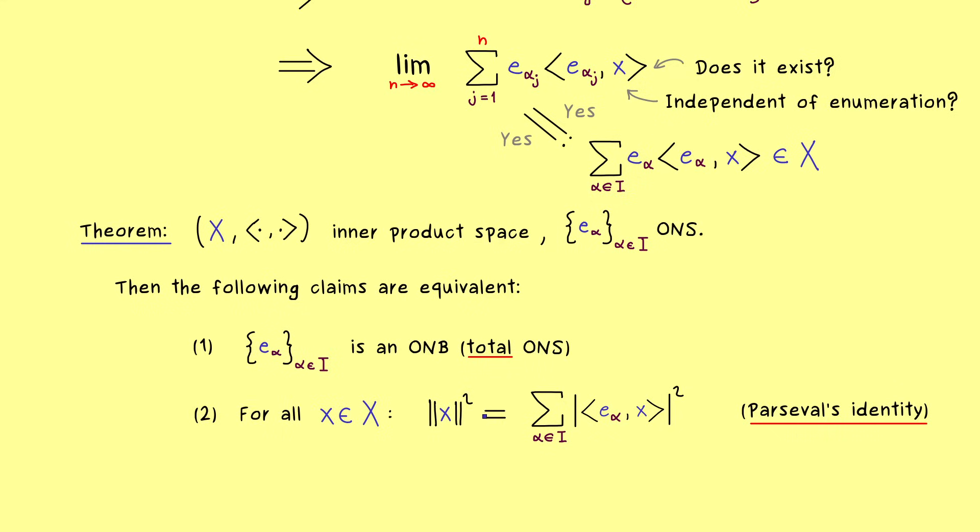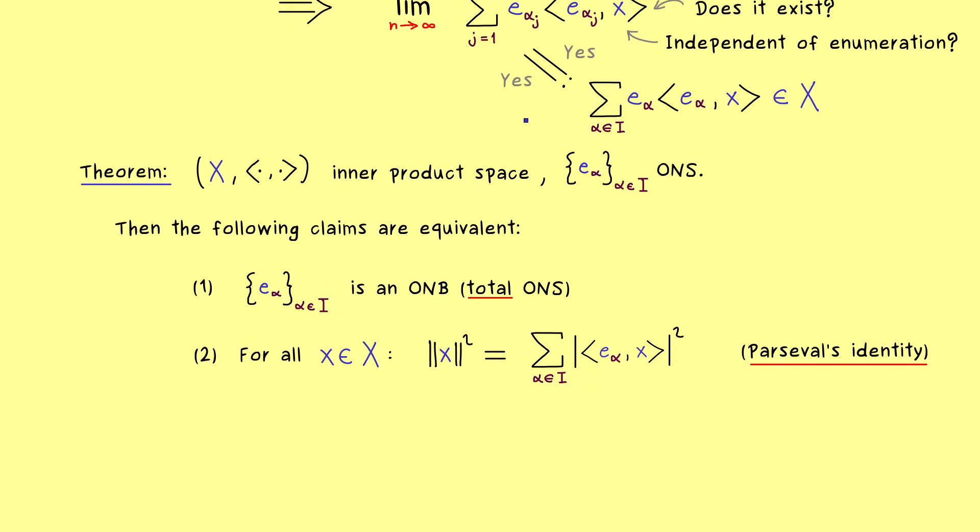However it also works the other way around, which means if we have Parseval's identity for every x in X, then we necessarily have an ONB. In addition to that, I want to show you two more equivalent statements, which nicely connect to what we have done before.